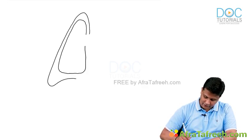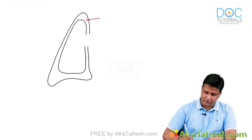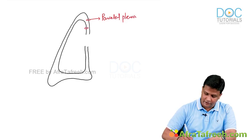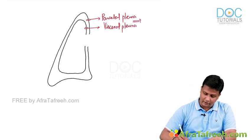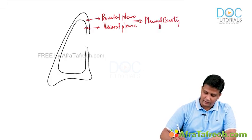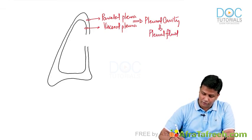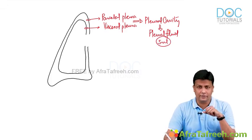Between the two layers of the pleura there is a cavity known as the pleural cavity. In this pleural cavity there will be fluid — the pleural fluid — and approximately it will be about 5 ml.